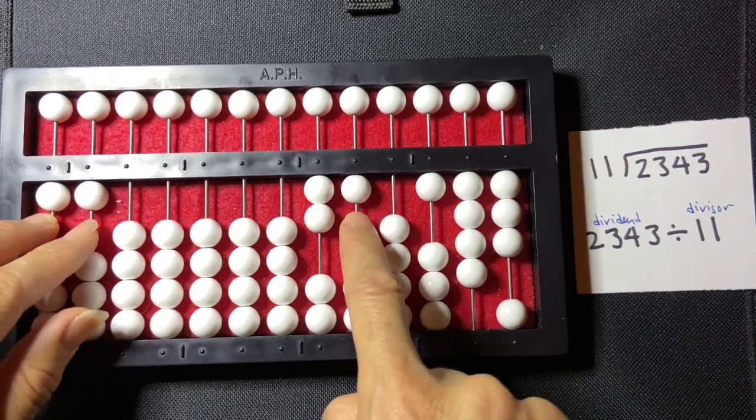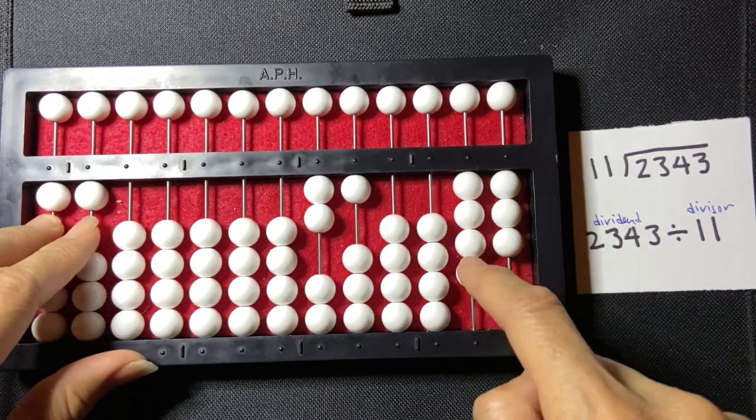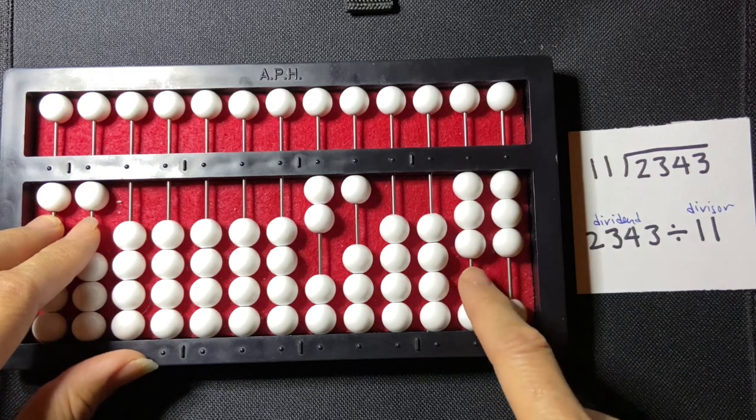That's one time, and so 1 times 11 is 11. So 14 minus 11 is a 1 and a 1.